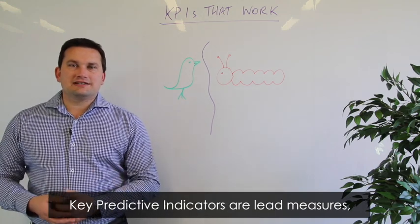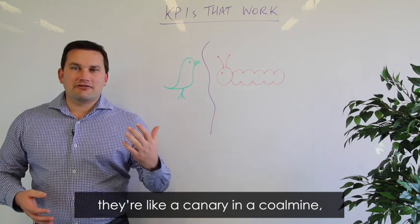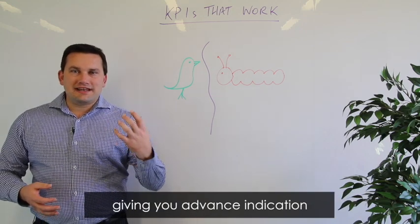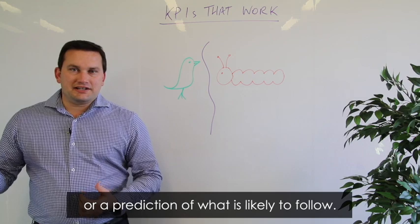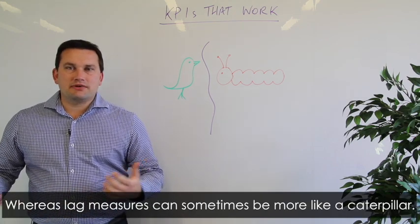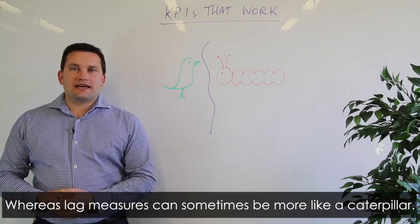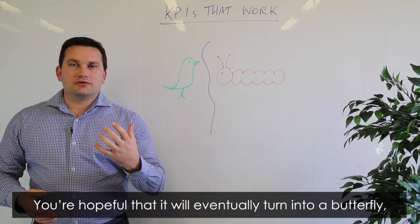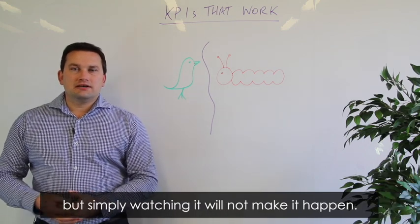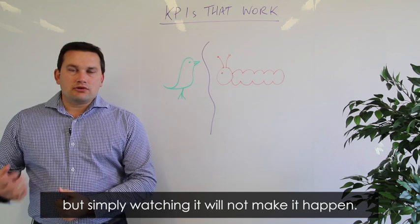And key predictive indicators are lead measures. They're like a canary in a coal mine, giving you advance indication or a prediction of what is likely to follow. Whereas lag measures can sometimes be more like a caterpillar. So you're hopeful that it will eventually turn into a butterfly, but simply watching it will not make it happen.